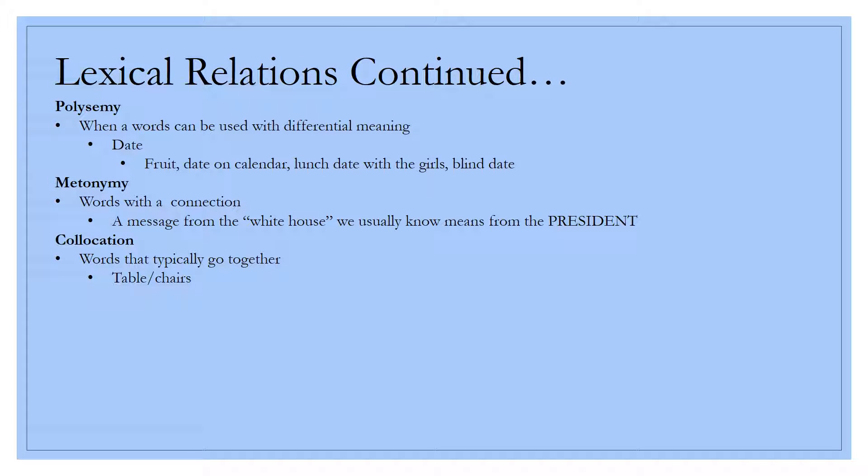Next we have polysemy, which is when a word can be used with differential meanings. Take the word date, for example. There are so many different things you can think of when you hear the word date. It can be the fruit, a date on a calendar, a lunch date with the girls, a blind date. Any of those can be used with that word. However, there's so many different meanings that go with it.